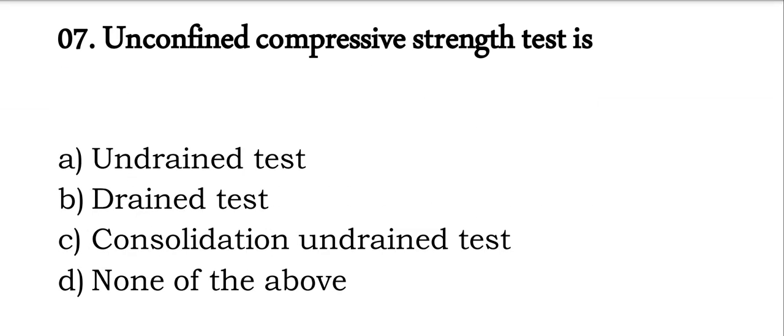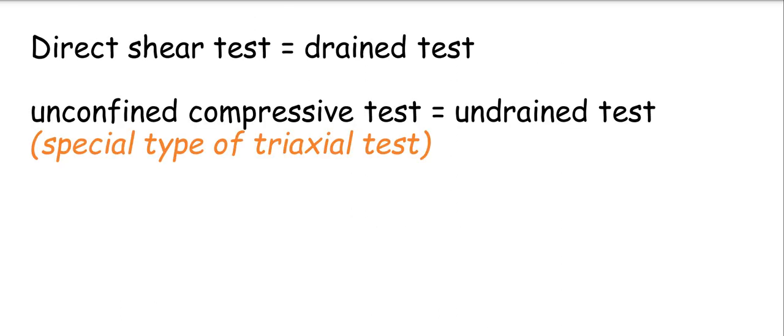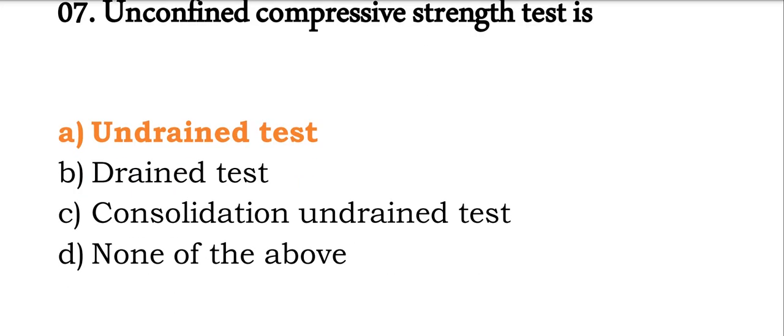Unconfined compressive test: UCS test is basically undrained test. Direct shear test is drained test whereas unconfined compressive test is also undrained test. It is a special type of triaxial test and it is also known as undrained test. The correct answer will be undrained test.